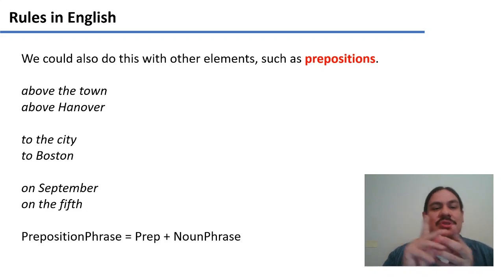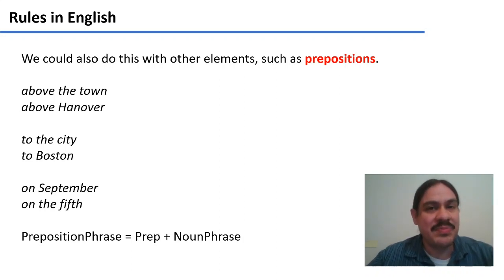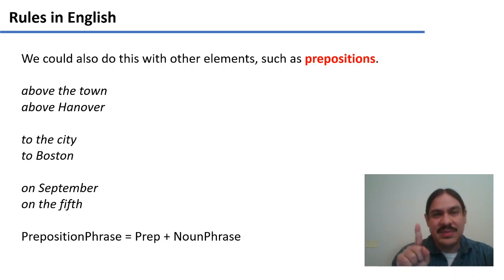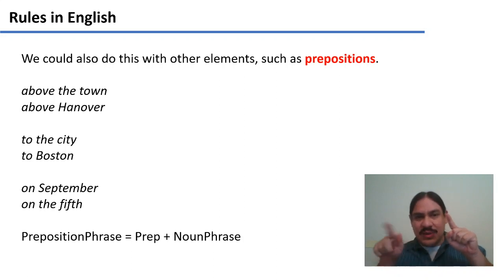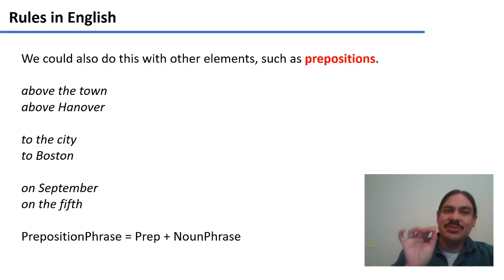We have noun phrases and we saw a little bit of verb phrases. How about prepositions? Here we have some phrases in English: 'above the town,' 'above Hanover,' 'to the city,' 'to Boston,' 'on September,' 'on the fifth.' The interesting thing about the structure is that it's a preposition plus a noun phrase. Sometimes what follows the preposition is a determiner and then a noun, like 'the town,' and sometimes it's just a noun, like 'Hanover.' You always have a preposition and a noun phrase, and you can reuse the noun phrase structure defined before.